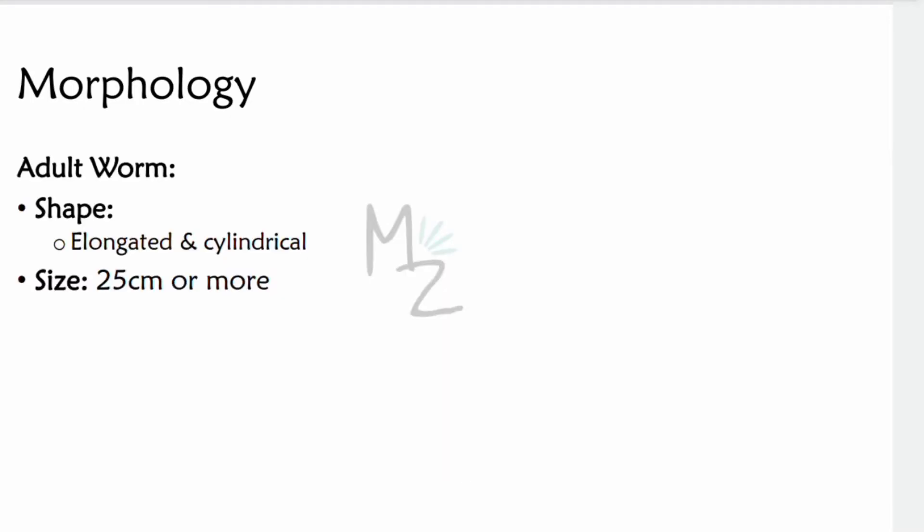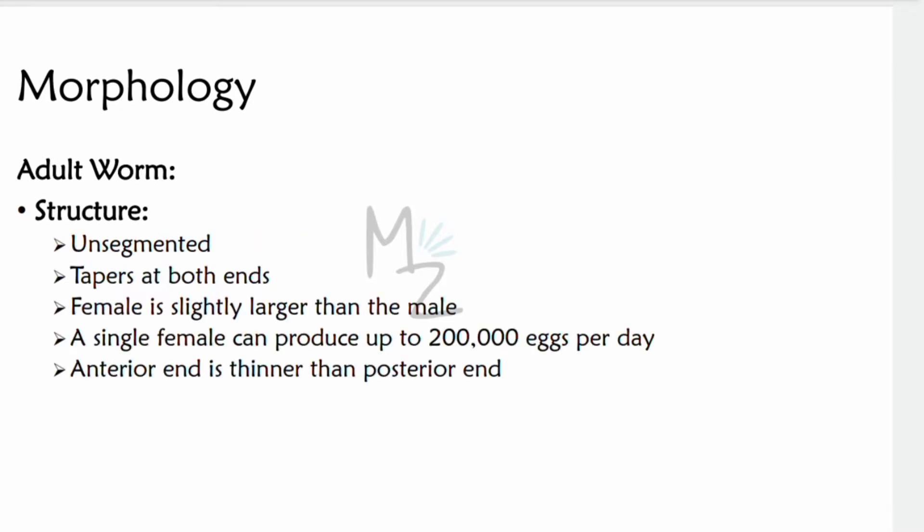The adult worm — Ascaris Lumbricoides — is elongated and cylindrical in shape. As discussed, it is 25 cm or more in size, making it the largest nematode and giving it the name giant roundworm. Unlike tapeworms, it is unsegmented and tapers at both ends. The female is slightly larger than the male, and a single female can produce up to 200,000 eggs per day.